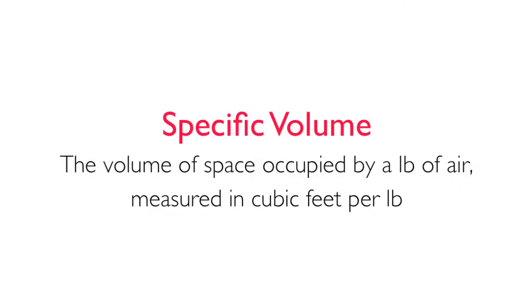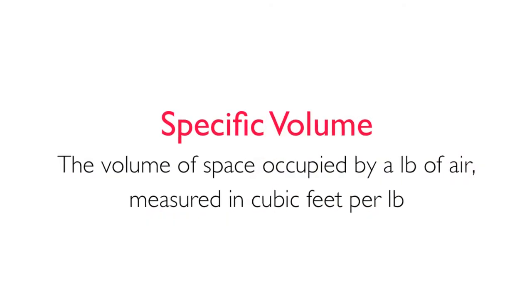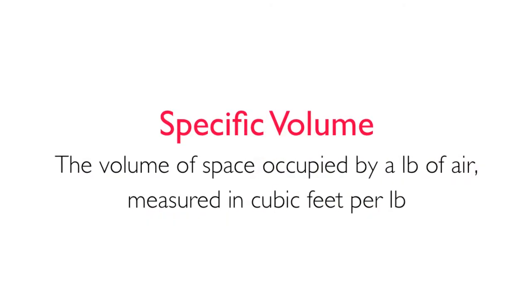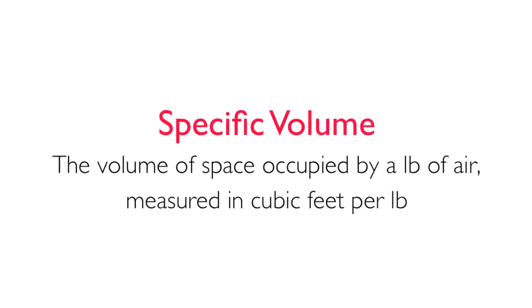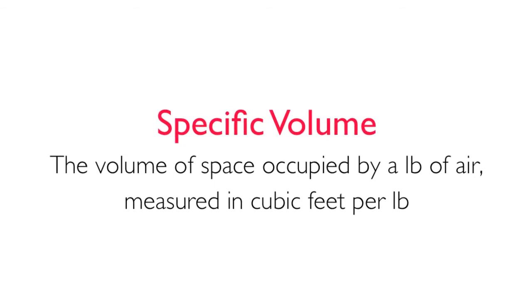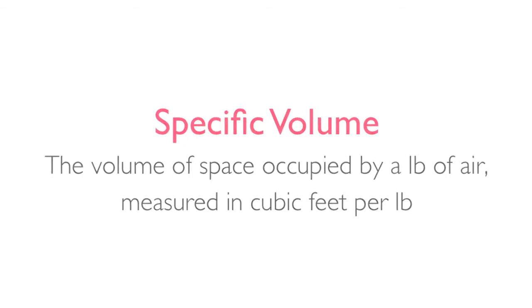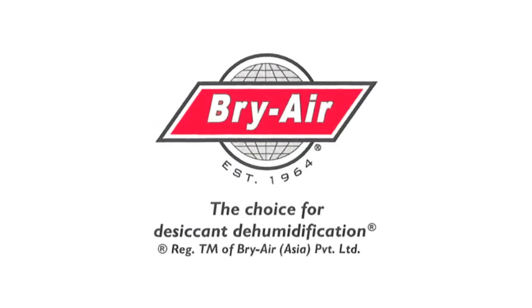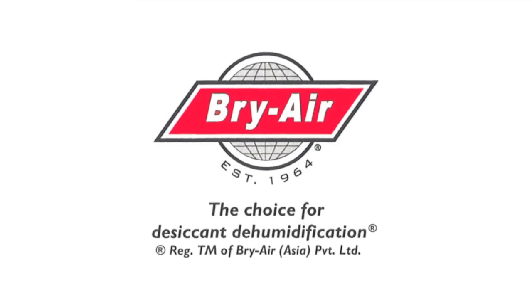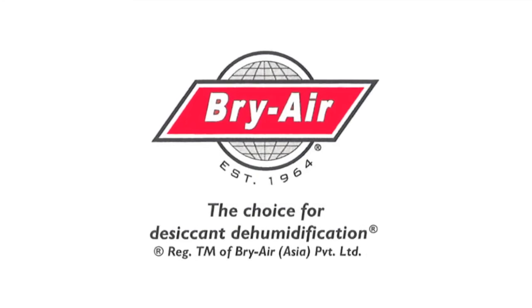Specific volume is the volume of space occupied by a pound of air, measured in cubic feet per pound. That concludes the first video in the series on psychrometrics, the properties of air.